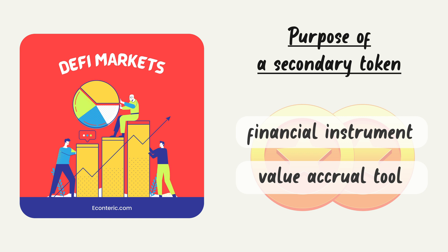We talked about how the secondary token as a financial instrument is bad based on our research — don't invest in that, prices go down. But when we look at the secondary token as a way of price support, and if it can be designed or quantified in a way where it accrues value to support the stablecoin, that's a whole different story. As a financial instrument in an algo stablecoin — not the best idea. As a value accrual mechanism to support prices, acting as a lower bound barrier, that's a much better idea.